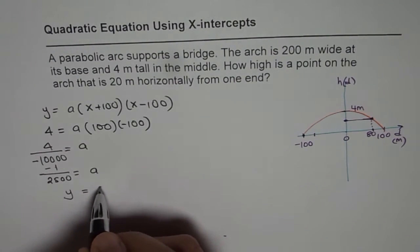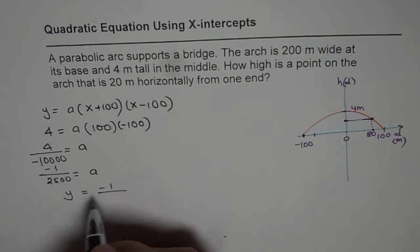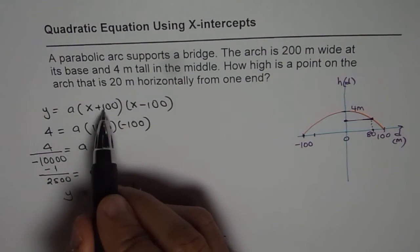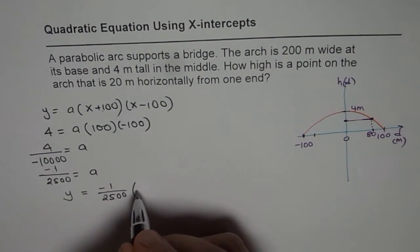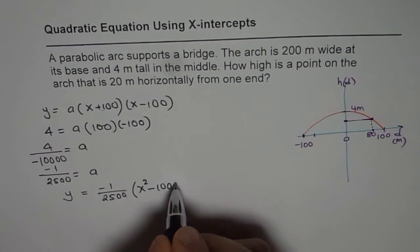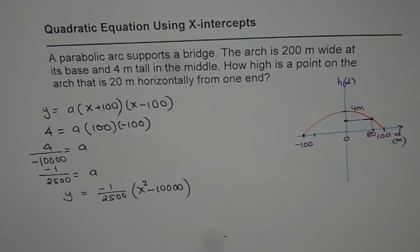Times (x + 100) times (x - 100) is indeed x squared minus 100 squared, so 10,000. So that is the equation for us.